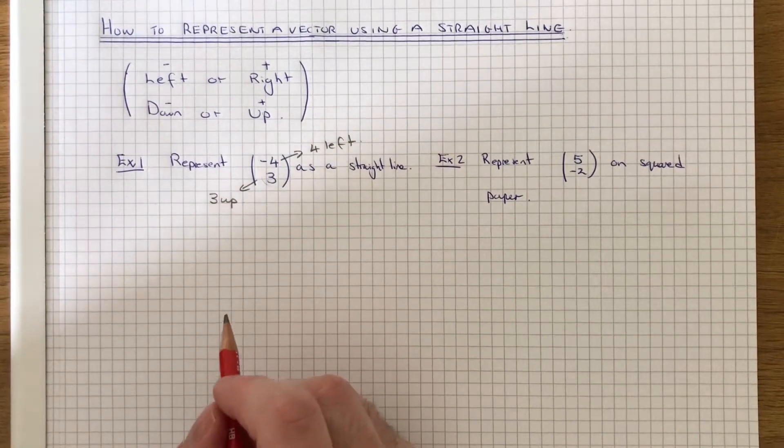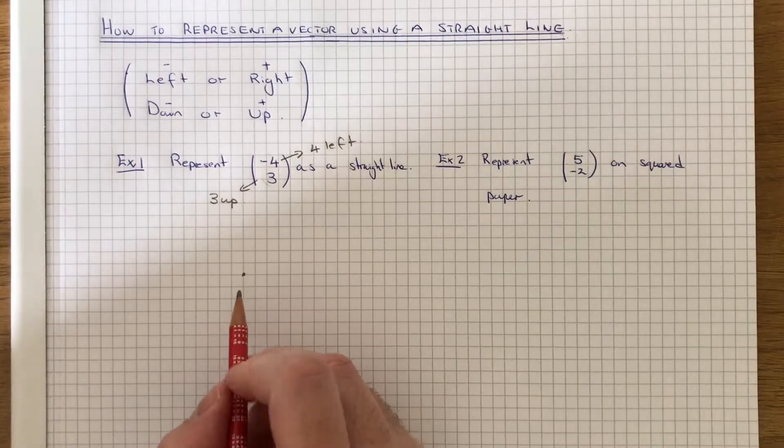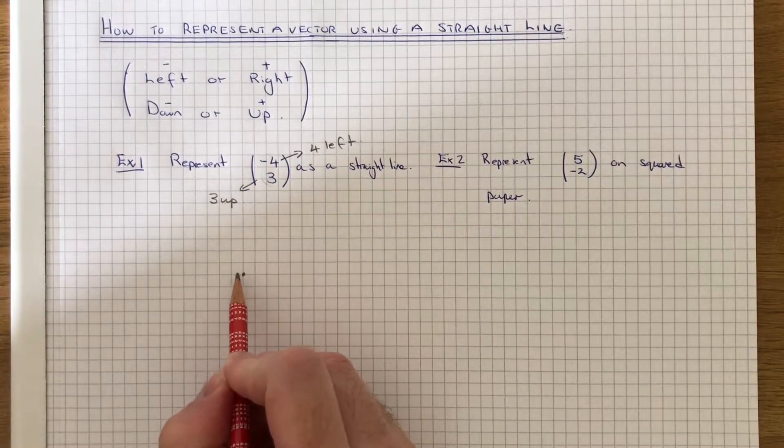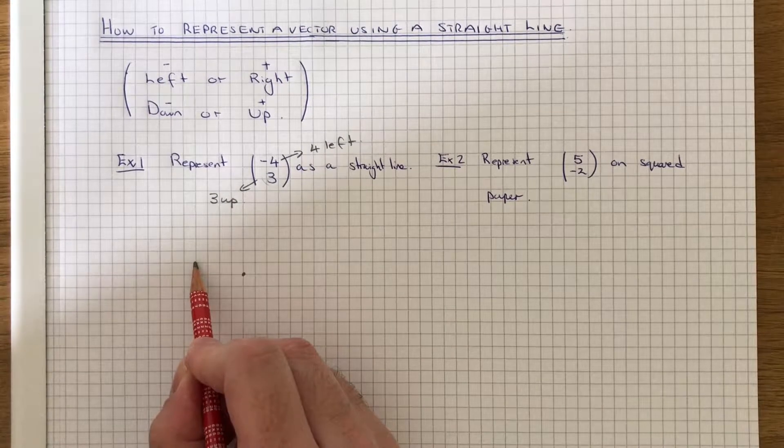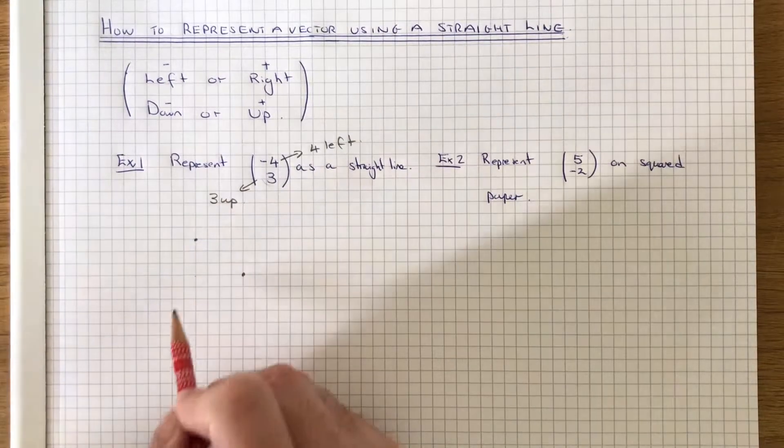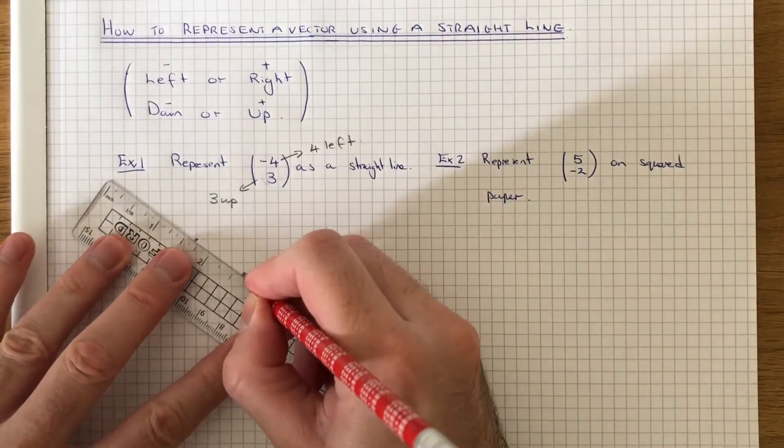Pick a point on your page. Let's go with this one here. We've got to move this point 4 left: 1, 2, 3, 4. And 3 up: 1, 2, 3.